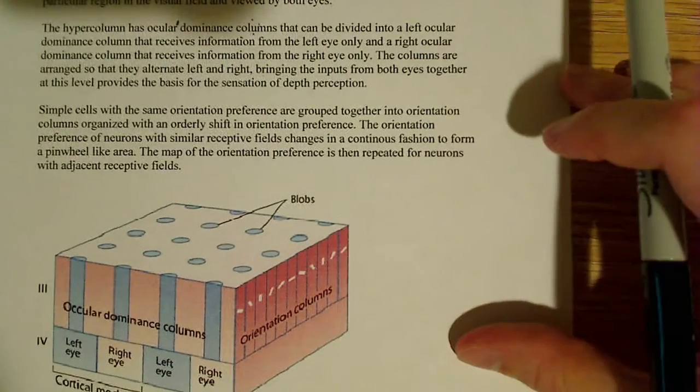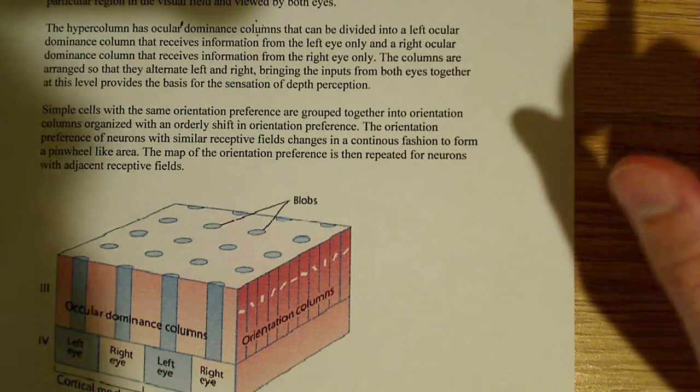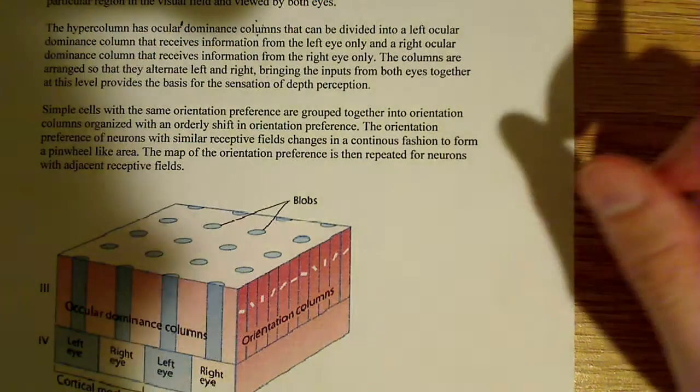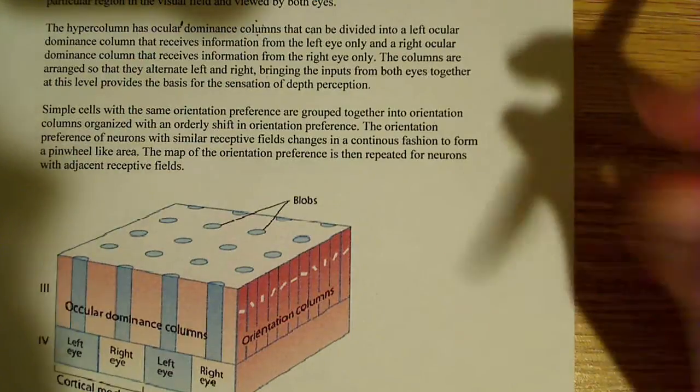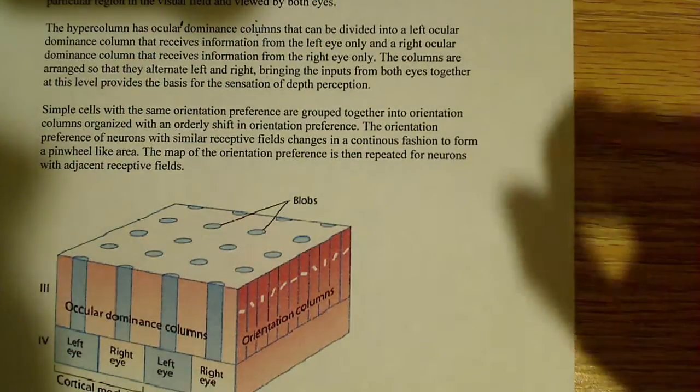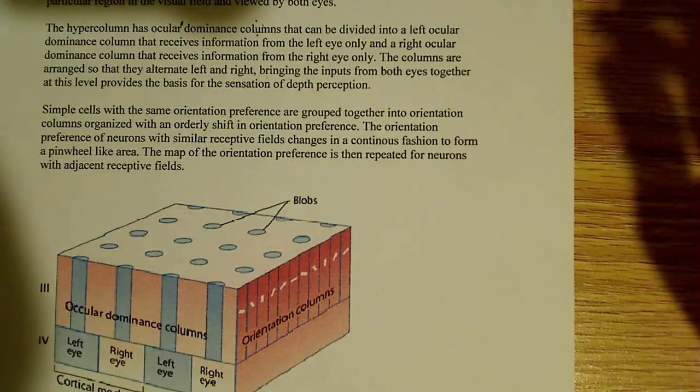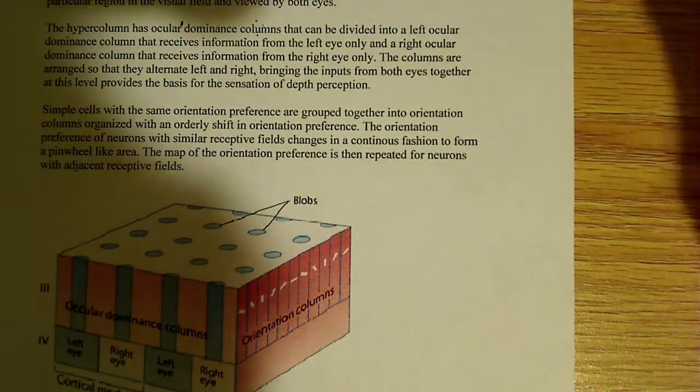So essentially, this hypercolumn really consists of two main parts. It consists of the ocular dominance columns and the orientation columns. And they each provide a different role. One of them, in the case of the orientation columns, provides the depth perception and sensation.